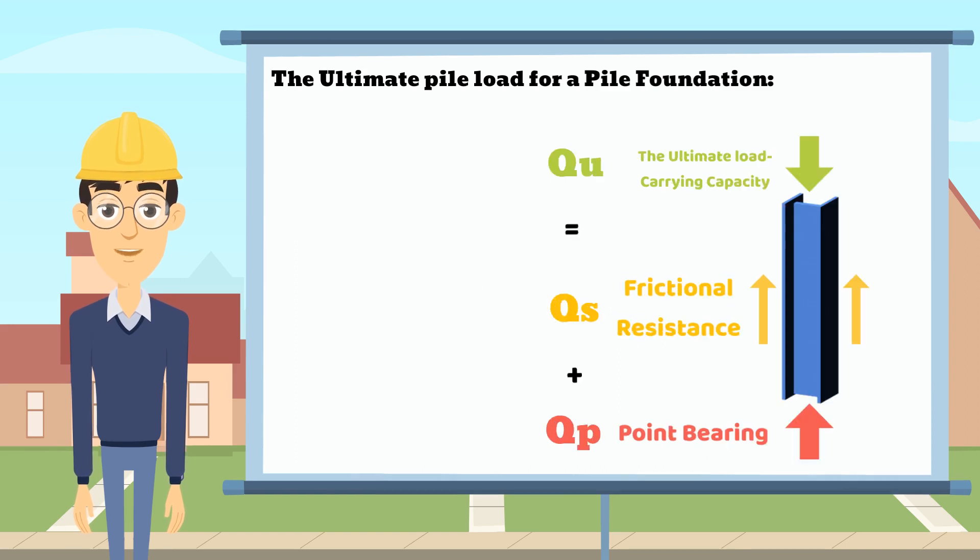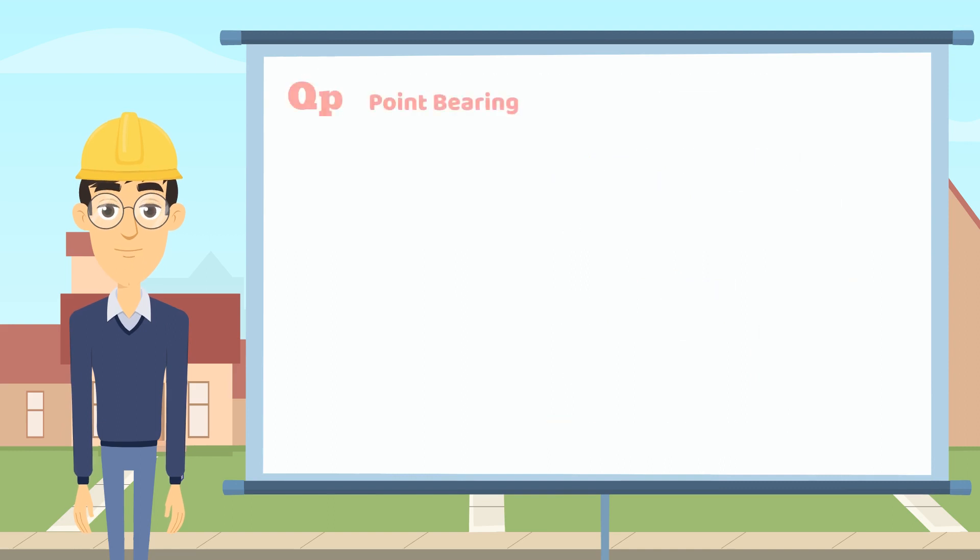First, let's talk about the point bearing capacity QP. The point bearing of piles is equal to the area of the pile tip, that's AP, multiplied by the unit point resistance, the small qp.